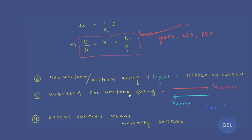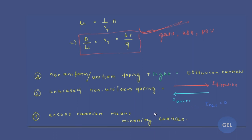In the case of unbiased non-uniform doping, if the diffusion current (I_diffusion) and drift current (I_drift) are balanced, diffusion current arises because non-uniform doping creates a concentration gradient. I_drift is generated due to the built-in potential inside the non-uniformly doped material. These two balance each other, so the net current value will be zero.